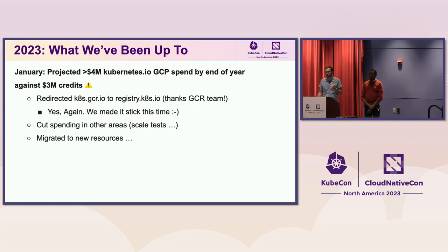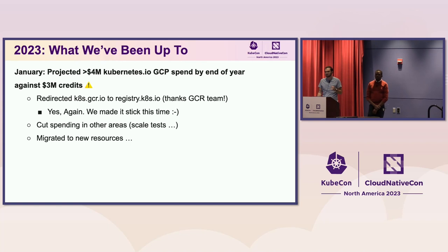We were spending north of $2 million a year just hosting the container images that everyone uses. We cut spending in some other areas temporarily — the Kubernetes project runs 5,000-node scale tests to ensure Kubernetes is performing and scaling, and some of those take 14 hours with 5,000 VMs plus the control plane. That's really expensive, so we cut back on the frequency of running some of these tests temporarily while working on other options.